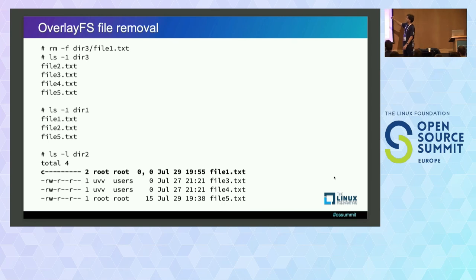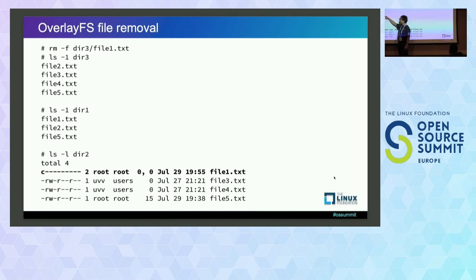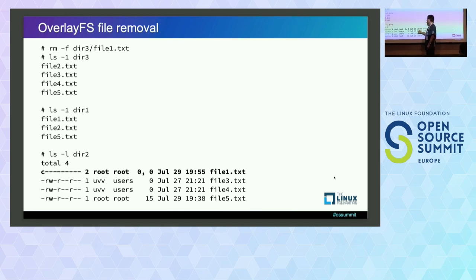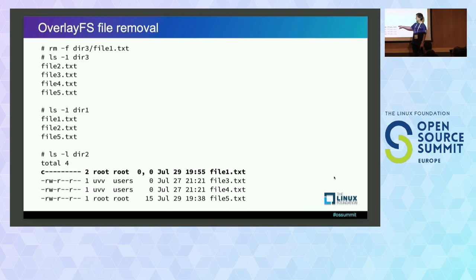Now here's the removal case. If we remove a file from the overlay — for example file one — it is still present on the lower layer, so the lower layer is not touched. But on directory two, a special device is created with major and minor number zero. It's a special character device and this is the whiteout — that's how it is marked on the upper layer that the file is removed from the overlay.